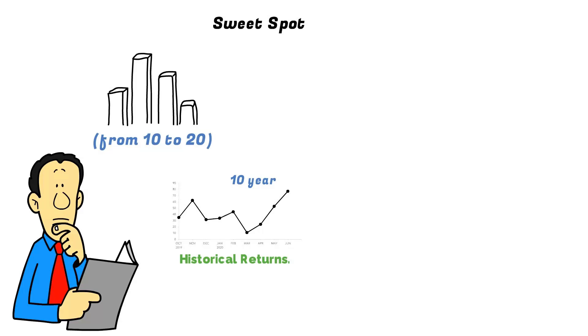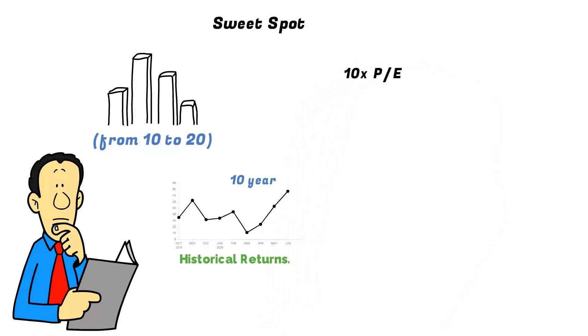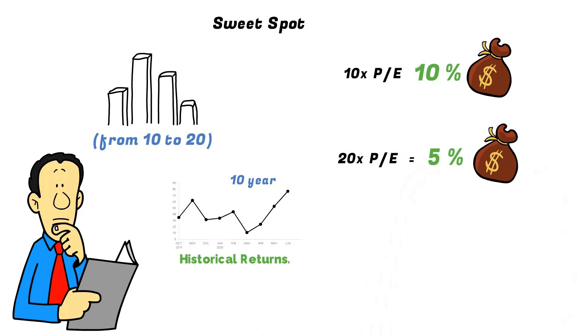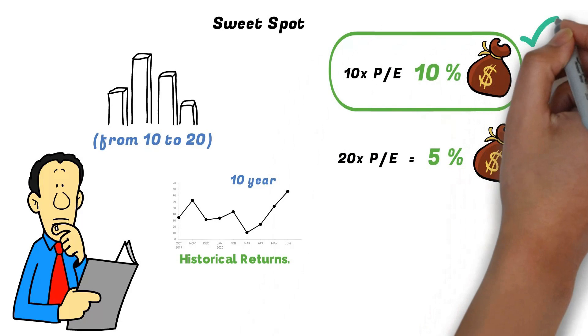Doing some algebra to help visualize this, a 10x P/E means you're making 10 percent earnings yield, while a 20x P/E will equate to a 5 percent earnings yield. So 10 percent seems great, which means 10x P/E makes sense.